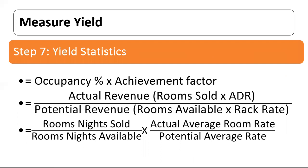The last step is yield statistic. Yield is the ratio of actual revenue generated to potential revenue, and can be calculated by three formulas: first, occupancy percentage multiplied by achievement factor; second, actual revenue upon potential revenue; and third, room nights sold upon room nights available, multiplied by actual average room rate upon potential average room rate.